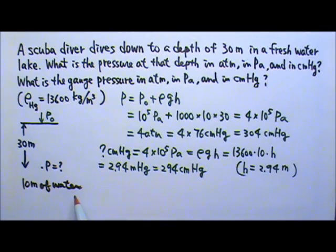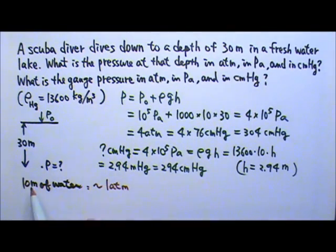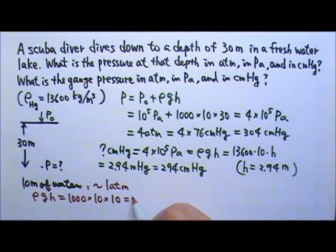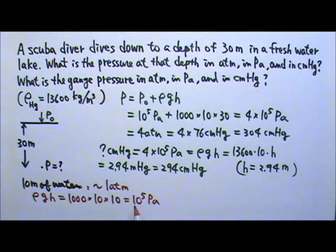Now, just in case if you haven't noticed, every 10 meters tall of water column provides almost 1 atmosphere of pressure. The pressure produced by this 10 meter tall water column can be found using ρgh. For water, the density is 1000, and I'm going to use 10 for g. And if the water column is 10 meters tall or the depth is 10 meters, we get 10⁵ pascals, which is about 1 atmosphere.